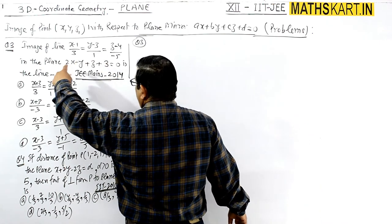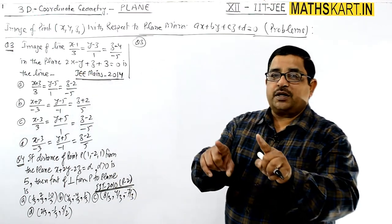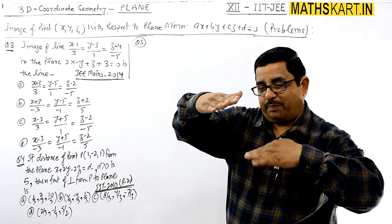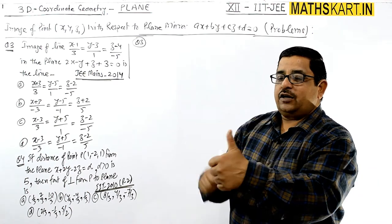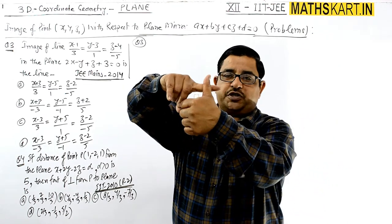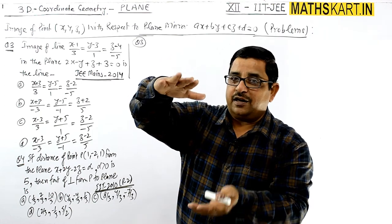Check the image of the line. The parallel vector of this line and the normal vector of the plane - if their dot product equals zero, then we can directly say the line is parallel to the plane. Because if the plane's normal vector and line's parallel vector are at 90 degrees, it means the line is parallel to the plane.